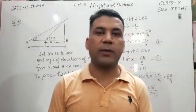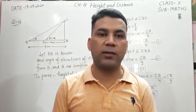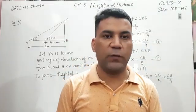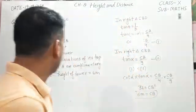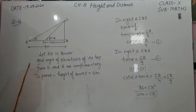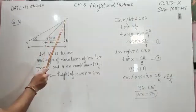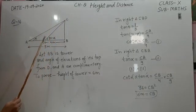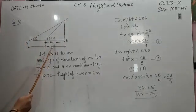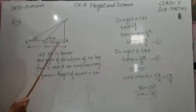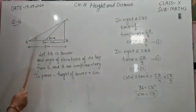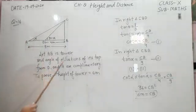Good morning everyone, welcome to Radha Badha online classes. In this video we will discuss question number 16 of exercise 9. In question number 16, it's given that the angle of elevations of the top of a tower from two points D and A, which are 4 meters and 9 meters away from its base, are complementary.